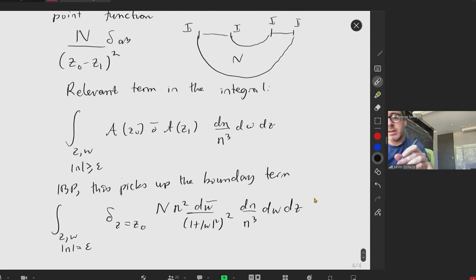In the boundary term, we're going to get rid of the d-bar. And we're going to find something like this with N squared dw bar, n plus w squared squared, dn over n cubed dw dz. Oh, and I forgot a crucial term, which is 1 over z minus z1 squared.